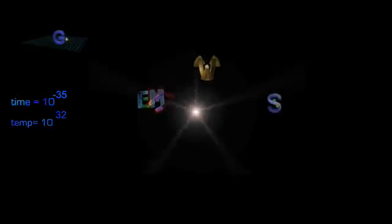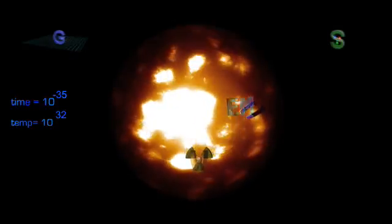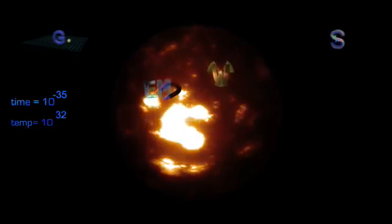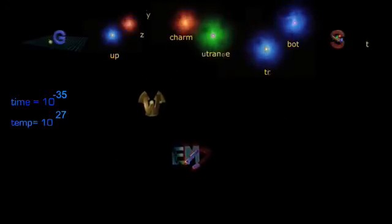At 10 to the minus 35 seconds, the strong nuclear force exits the union as well, and this triggers inflation. The event where the universe instantaneously grew in size from tinier than an atom to an unknown large size. This expansion and subsequent cooling down to 10 to 27 degrees allow six different types of quarks to form.